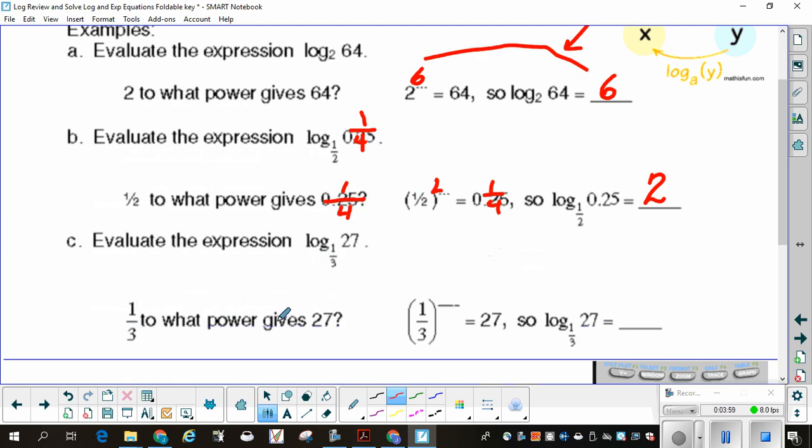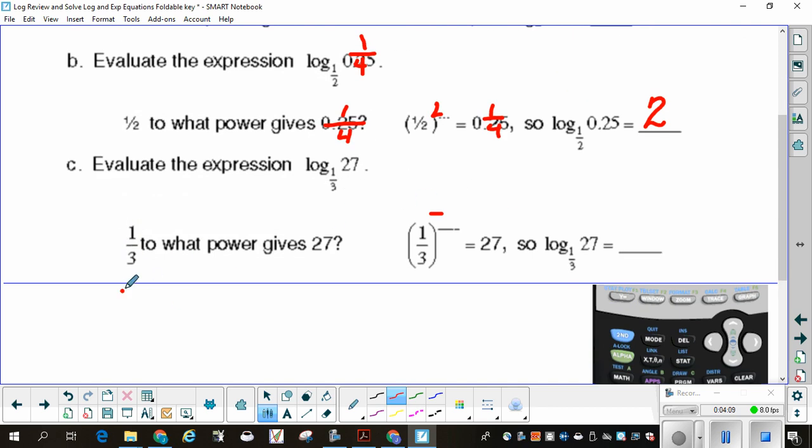Remember 1/3 to what power gives 27. I have to first think it's going to be a negative. Now I'm going to think 3 to what power gives 27. That's 3 cubed equals 27. Since 1/3 is the reciprocal of 3, 1/3 raised to the negative 3, because the negative will flip it, make it a 3, then 3 cubed is 27. So negative 3 is my answer.